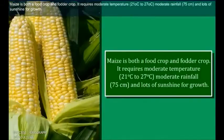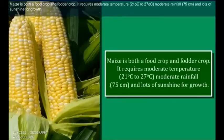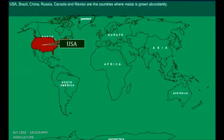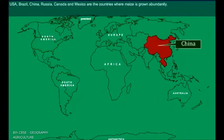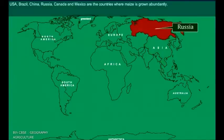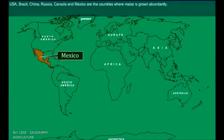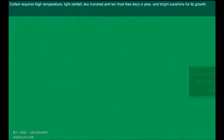Maize is both a food crop and a fodder crop. It requires moderate temperature of 21 to 27 degrees Celsius, moderate rainfall of about 75 cm, and lots of sunshine for growth. USA, Brazil, China, Russia, Canada and Mexico are the countries where maize is grown abundantly.